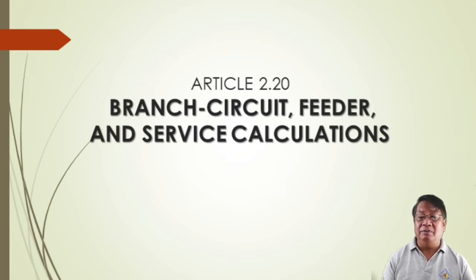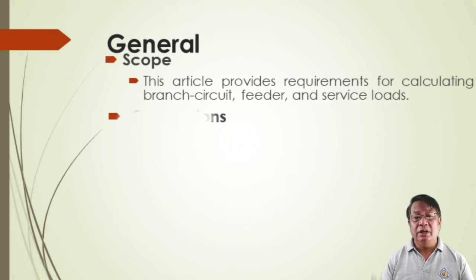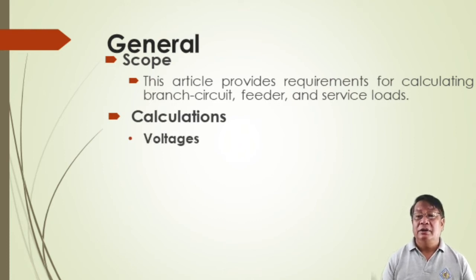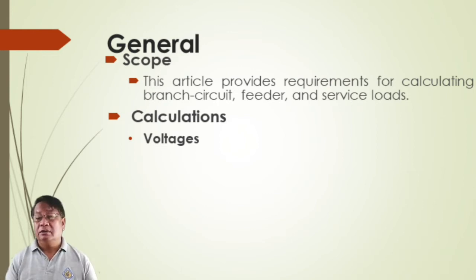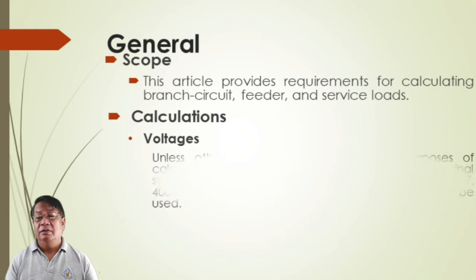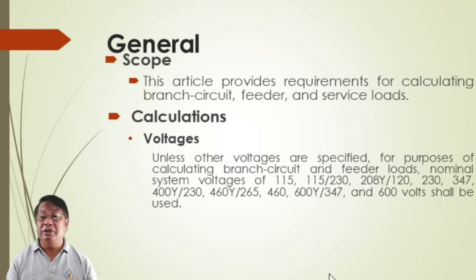Let's proceed to Article 2.20, branch circuit feeders and service calculations. The scope of this article provides requirements for calculating branch circuit feeders and service loads. For calculations, voltages will include special voltage ratings such as 115, 208, 230, 347, 400, and so on.